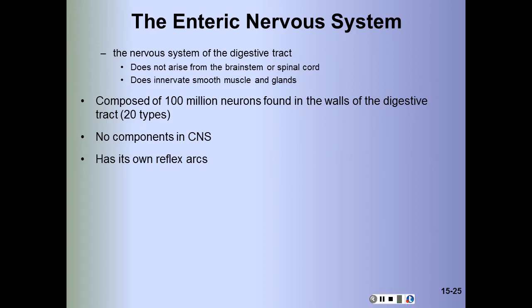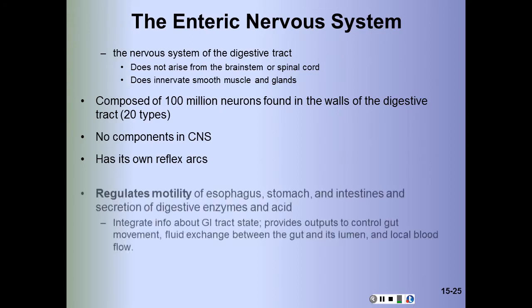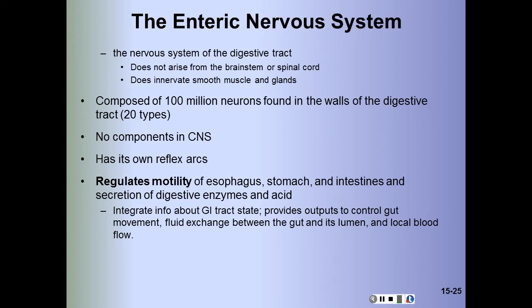The digestive tract has a nervous system of its own — the enteric nervous system. It does not arise from the brainstem or spinal cord, but it does innervate smooth muscle and glands. It consists of about 100 million neurons embedded in the wall of the digestive tract and regulates the motility of the esophagus, stomach, and intestines, as well as the secretion of digestive enzymes and acid. Normal digestive function also requires sympathetic and parasympathetic regulation.